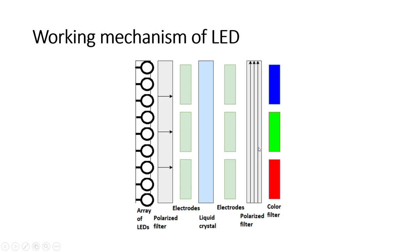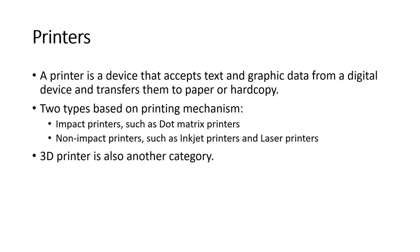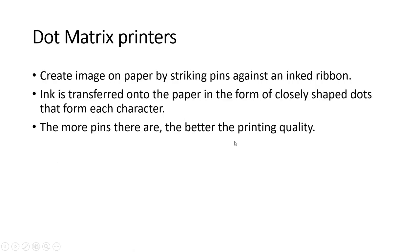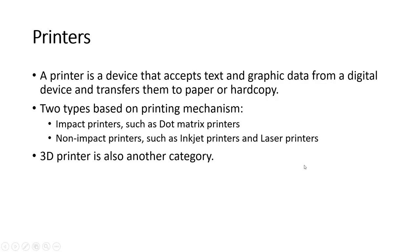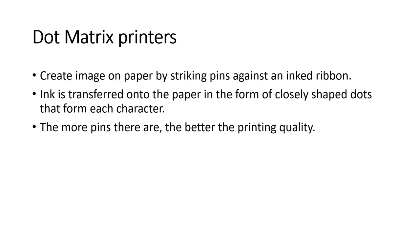Next we move on to printers. A printer is a device that accepts text and graphic data from a digital device and transfers them onto paper or hard copy. Based on the printing mechanism there are two types: impact printers and non-impact printers. Dot matrix printers are an example of impact printers, whereas inkjet and laser printers are examples of non-impact printers. There is also a category of 3D printers, which instead of transferring graphical data onto paper use the data to generate physical objects using materials like plastic polymers, metal alloys, or even food or organic ingredients.